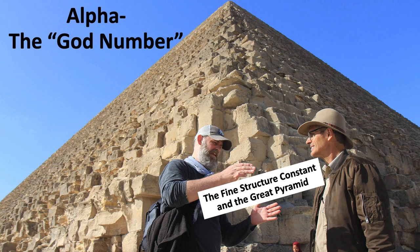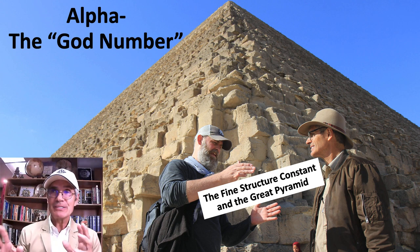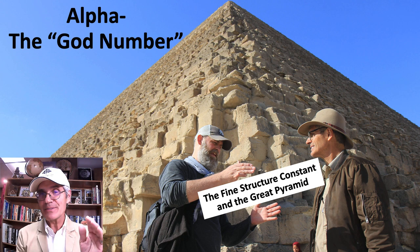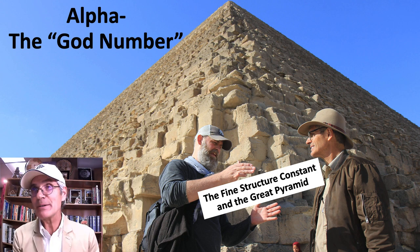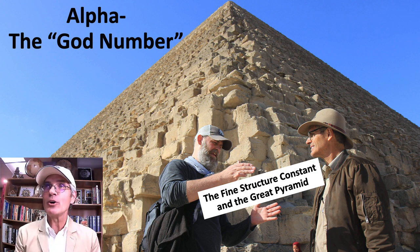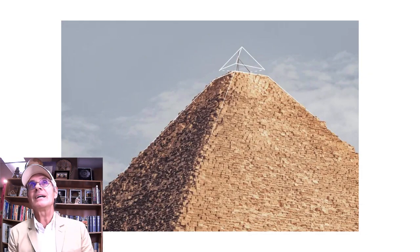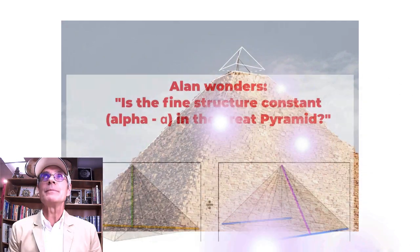We're taking a look again at alpha, the god number — the fine structure constant, one of the most mysterious modern constants from atomic physicists — and the fine structure constant in the Great Pyramid.